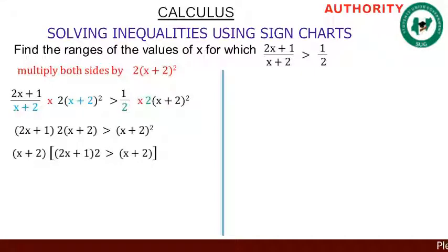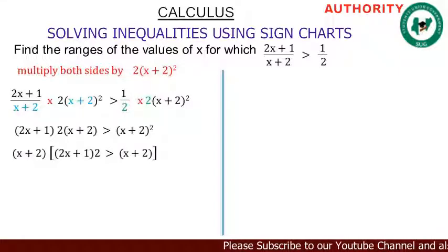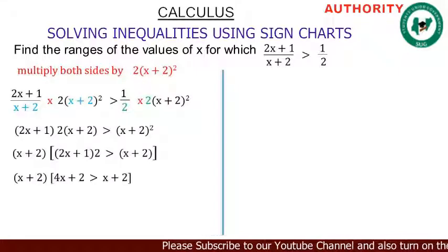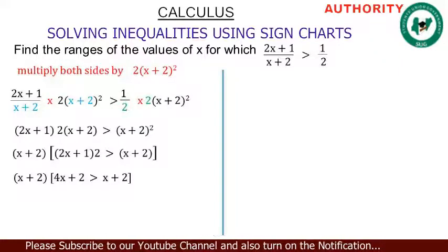Let's work on the inside of the big bracket. We have (x + 2) in the big bracket. Let's use 2 to open the bracket: 2 times 2x gives 4x, and 2 times 1 gives 2. So we have 4x + 2 greater than x + 2.